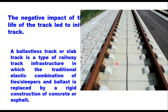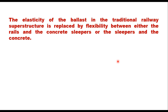Ballastless tracks offer a high consistency in track geometry, but adjustment of track geometry is not possible after the concreting of the superstructure. The elasticity of the ballast in traditional railway is provided by the stone aggregates, but in case of ballastless track, it is replaced by flexibility between either the rails and the concrete sleepers or between the sleepers and the concrete. However, the concrete slab itself is inelastic.